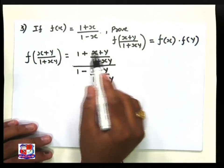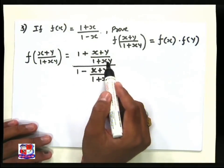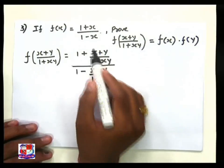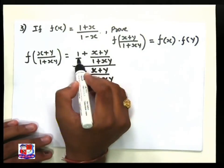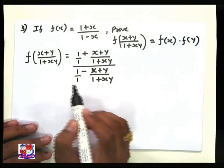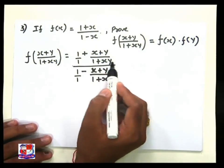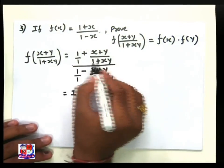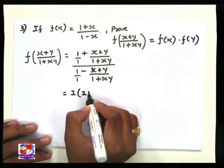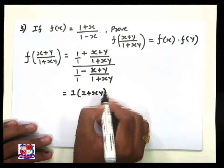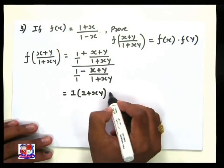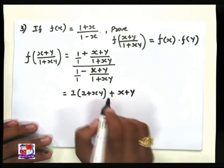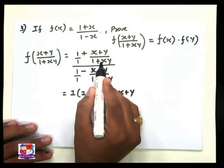The numerator contains (1 + xy) / (1 + xy) and the denominator contains (1 - x + y) / (1 + xy). We want to simplify both the numerator and denominator. Take LCM, that is (1 + xy), multiply with 1. The result is 1 plus xy, with plus sign as it is, and x plus y as it is, all divided by (1 + xy).